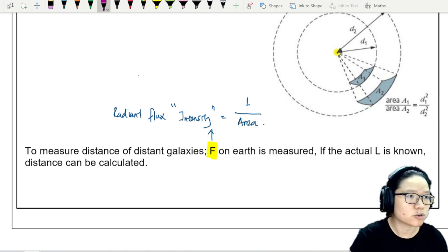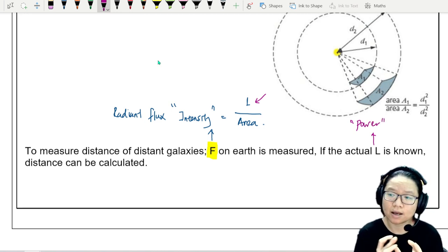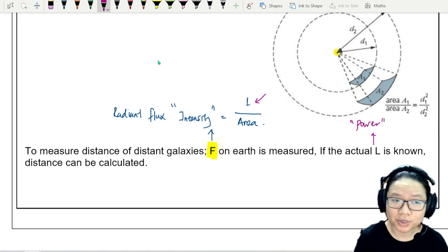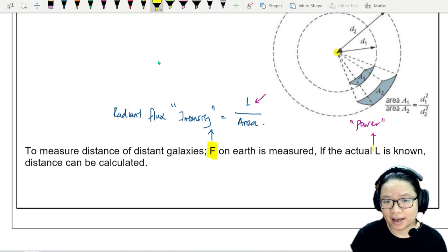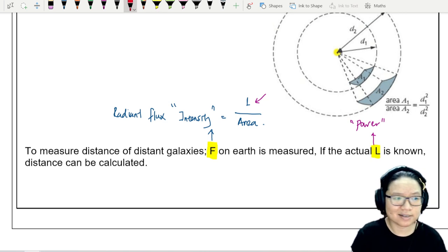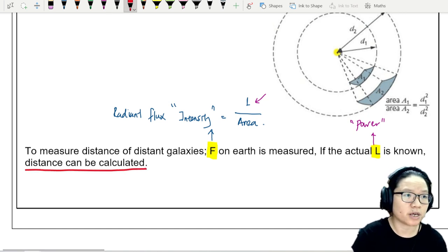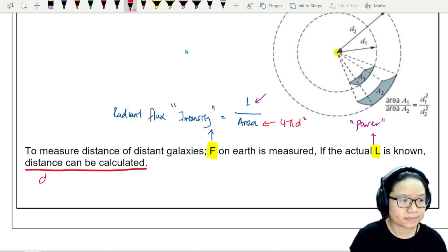And it would be luminosity per unit area. So another reminder here, this luminosity is a stand in for power. The electromagnetic radiation energy per unit time. These are things that you already know. So if we have F, we have L, we definitely can calculate the distance between the galaxies and the observer. Because this area can then be written as 4πD².